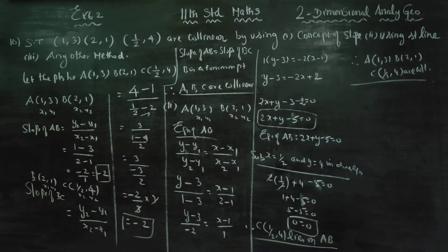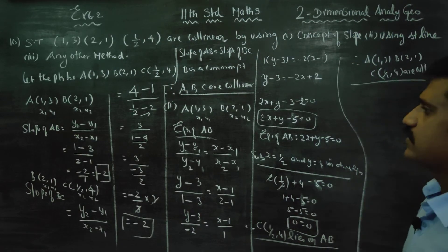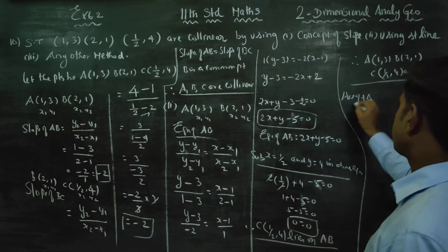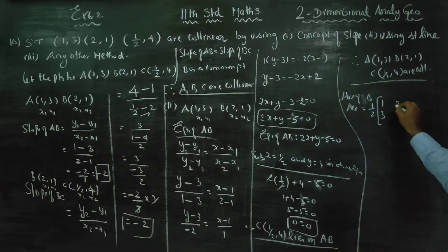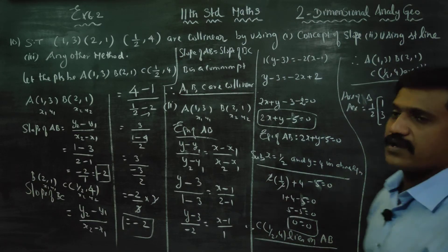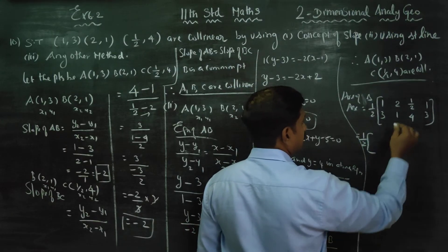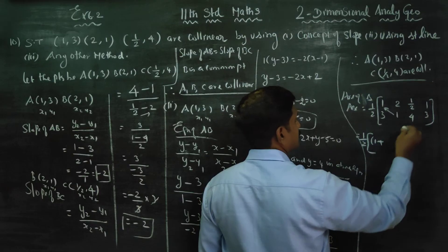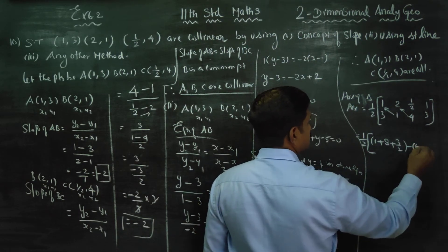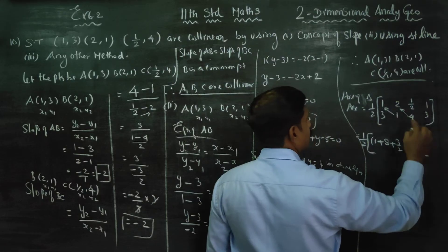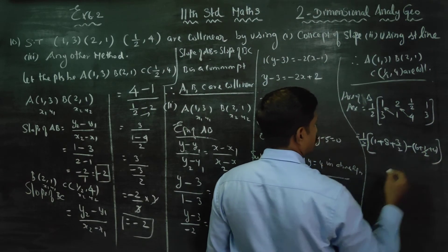The last method: you can use any other method such as area of the triangle. If the area of triangle ABC equals 0, you can prove the points are collinear. Area of triangle ABC equals 1/2 times the determinant using the three points: first point (1,3), second point (2,1), third point (1/2, 4), and repeating the first point (1,3). Computing the right-hand diagonal products: 1 into 1 is 1, 2 into 4 is 8, and 1/2 into 3 is 3/2. Then the left-hand diagonal products: 3 into 2 is 6, 1 into 1/2 is 1/2, and 4 into 1 is 4.